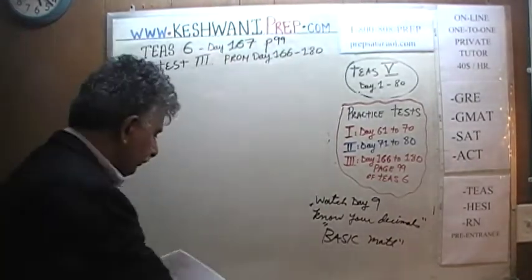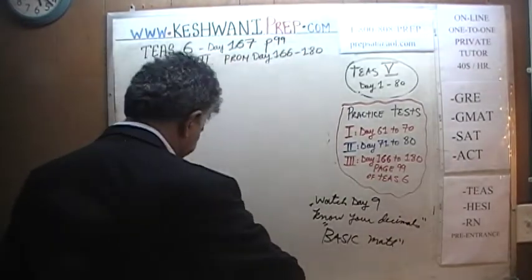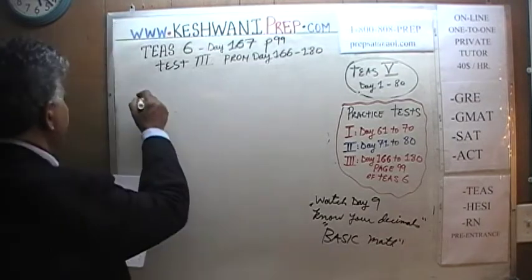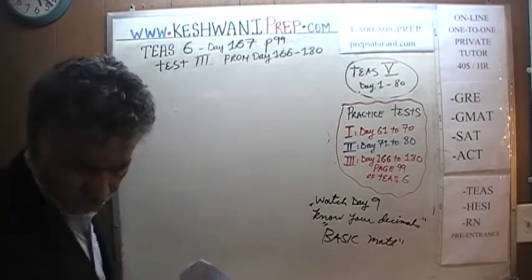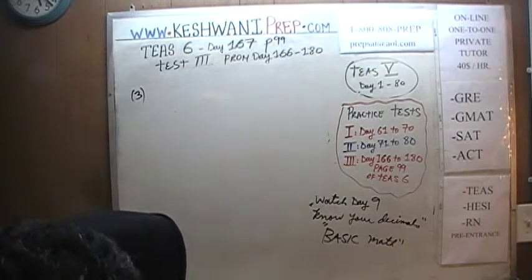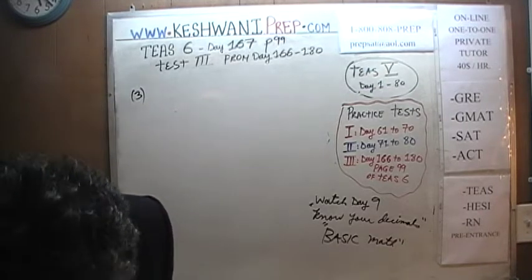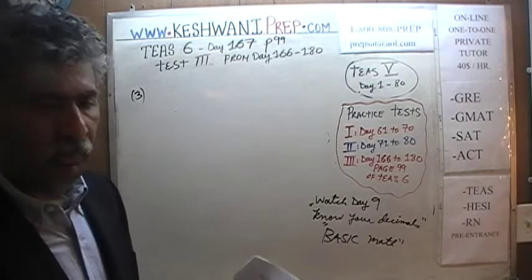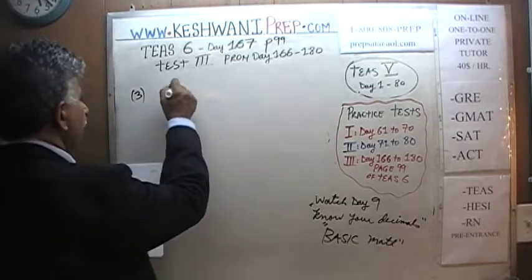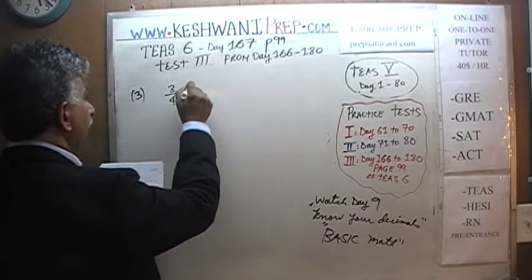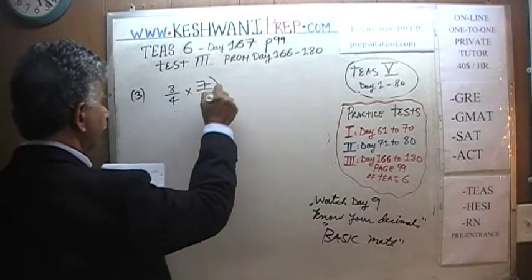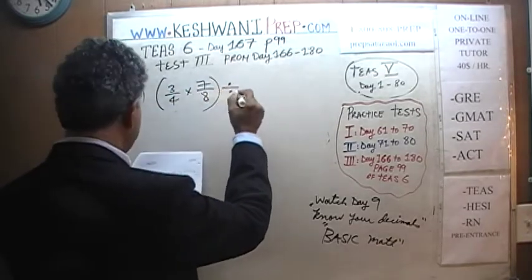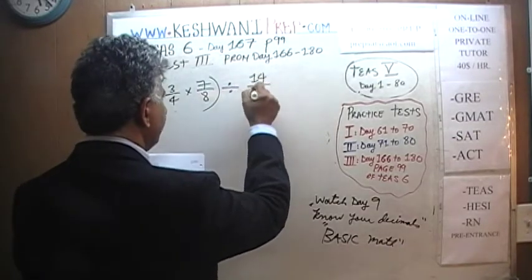We are on problem number 3. We are being asked to simplify this expression and figure out which of the following is the equivalent fraction. We have three-quarters times seven-eighths in parentheses, and then we are being asked to divide that by 14 over 15.